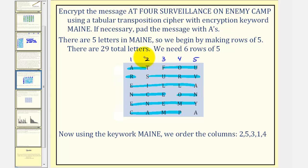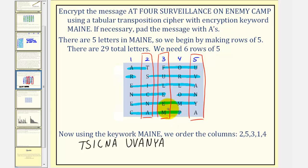So we'll first read off column two, this column here. So our encrypted message will be TSICNA. Next we'll read off column five. So we'll have UVANAYA. Next column three, so we have FULEEM.